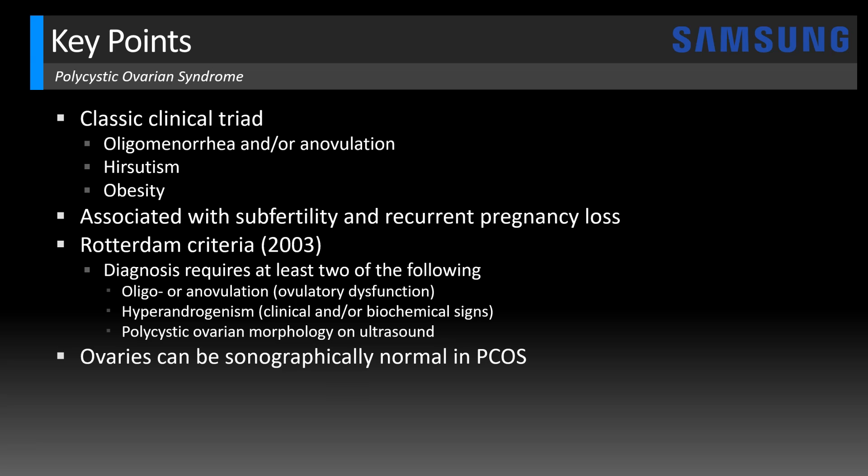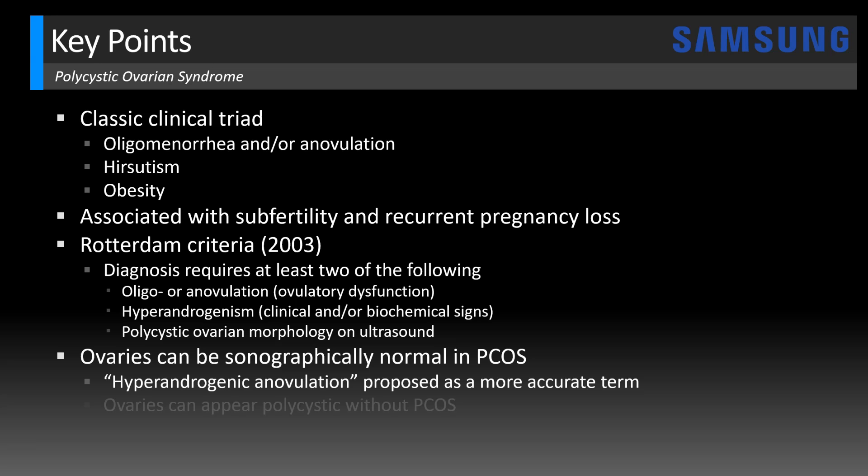Now, if you notice, because we only require two of these criteria, the ovaries can be normal in PCOS on ultrasound. That's why the term hyperandrogenic anovulation has been proposed as a more accurate description of this diagnosis, but PCOS is still the most widely used term. Also note that you can have polycystic ovaries without a diagnosis of PCOS — if we only have polycystic ovaries without ovulatory dysfunction or other signs of hyperandrogenism, that's not consistent with PCOS. So it's important not to under- or over-diagnose based on the ultrasound appearance alone.